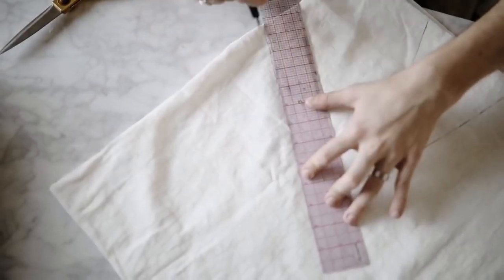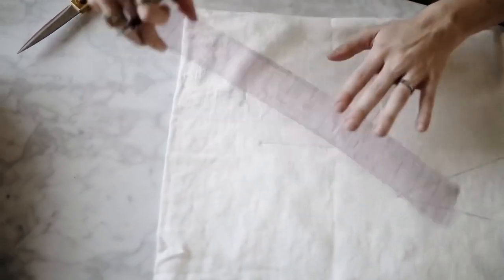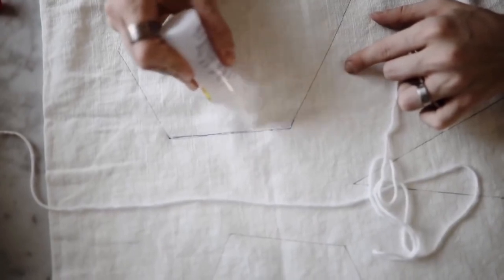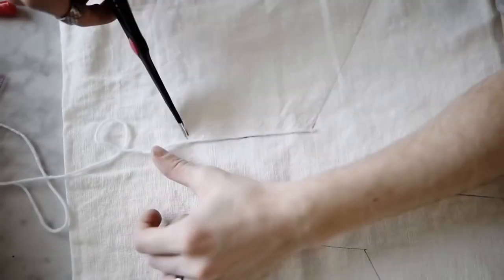So all I started off by doing was grabbing a ruler and just kind of creating a couple of geometric shapes on the front side of this pillow. These shapes are kind of just going to act as a basis for our geometric yarn designs that we're going to be creating on top.